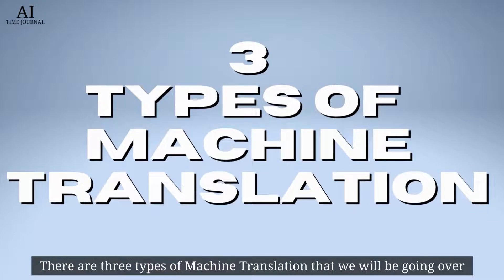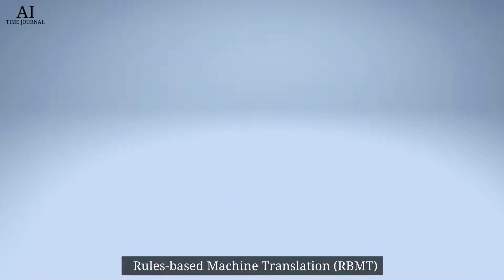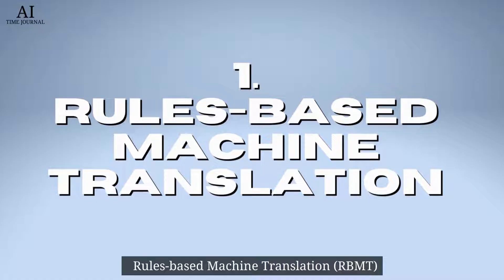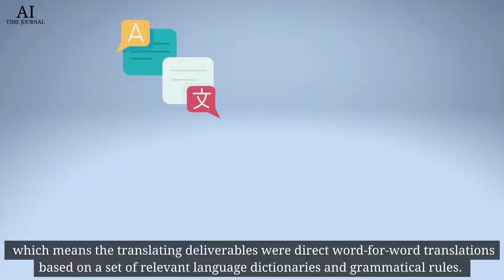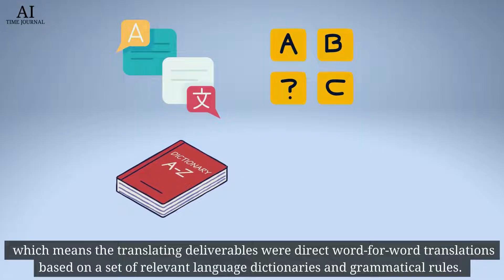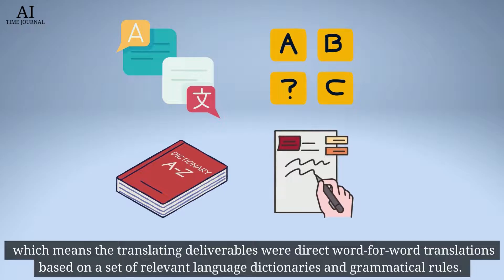There are three types of machine translation that we will be going over. The first is rules-based machine translation, which means the translating deliverables were direct word-for-word translations based on a set of relevant language dictionaries and grammatical rules.